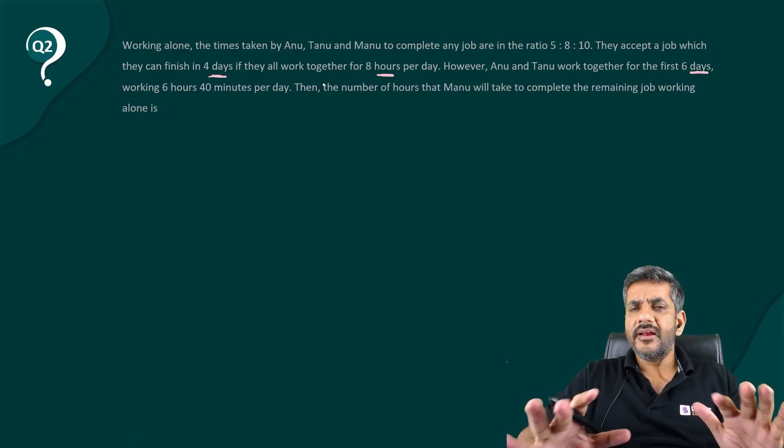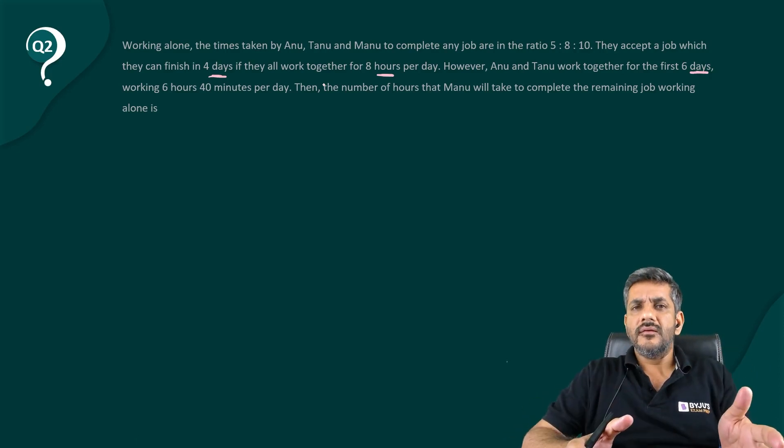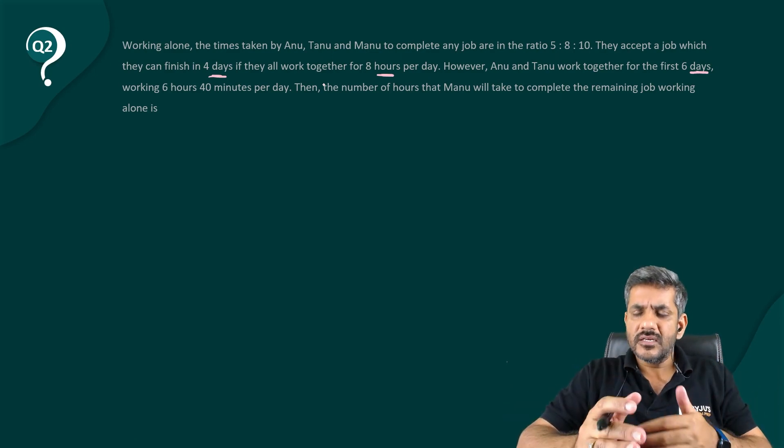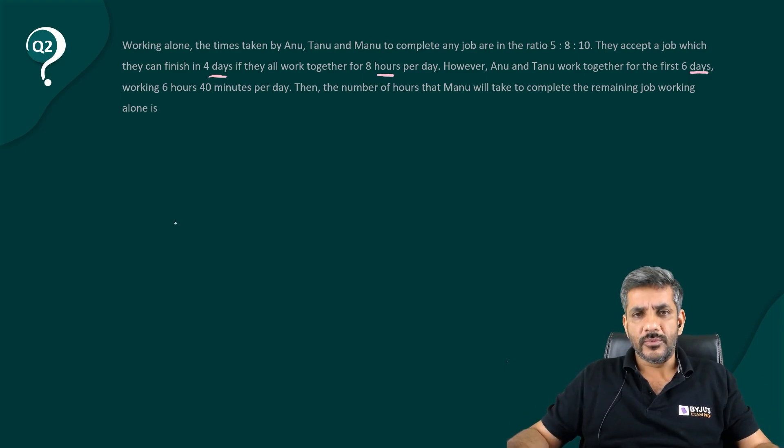And second thing, avoid any kind of variables. That is the aptitude way, that you just have to avoid any variables, do these questions thinking of a practical situation and try to solve that way.